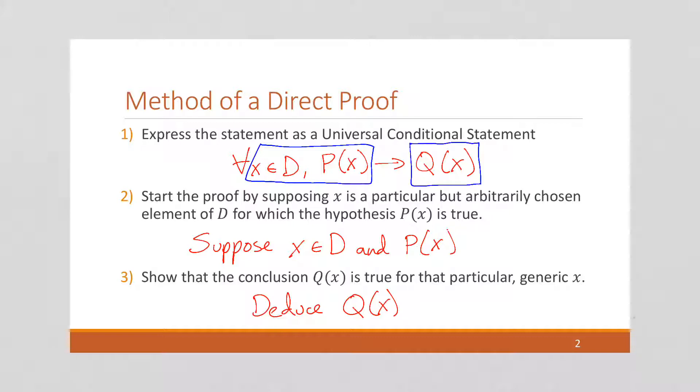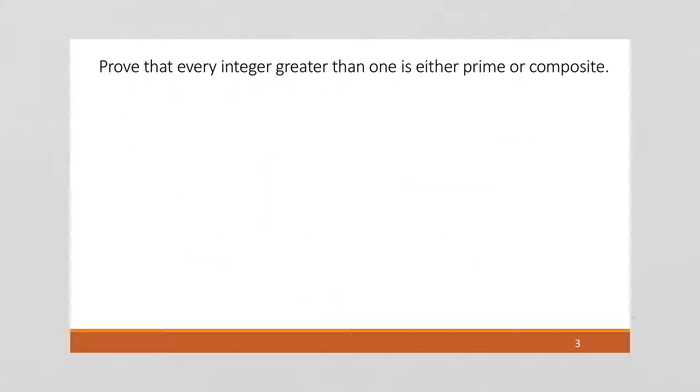So let's take a look at this example. We want to prove that every integer greater than 1 is either prime or composite. So this has sort of been implied. We've talked about it. We've said prime numbers, if they're not prime, they're composite, as long as they're greater than 1. But right now, we're going to prove it.